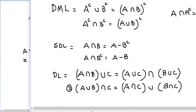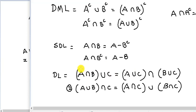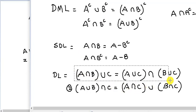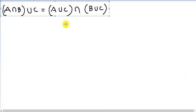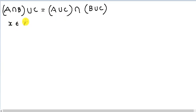Let's take a simple example — the distributive law. We'll take the first distributive law and apply it here to see how it works. We are going to prove that the left-hand side is the same as the right-hand side. Using the set element method, we say x belongs to A intersection (B union C), which is the left-hand side.